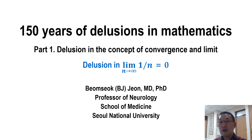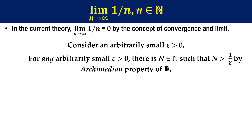In this video, I show a delusion in the claim that limit of 1 over n equals zero. In the current theory, limit 1 over n equals zero by the concept of convergence and limit.